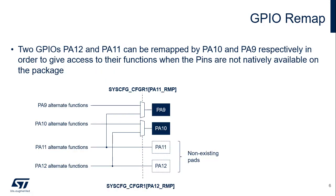When the PA11 and PA12_RMP bit in the SysCFG_CFGR1 register is set, the PA11 and PA12 alternate functions are remapped to pins PA9 and PA10. This is useful when these alternate functions are needed because PA11 and PA12 have no dedicated I/O pads.